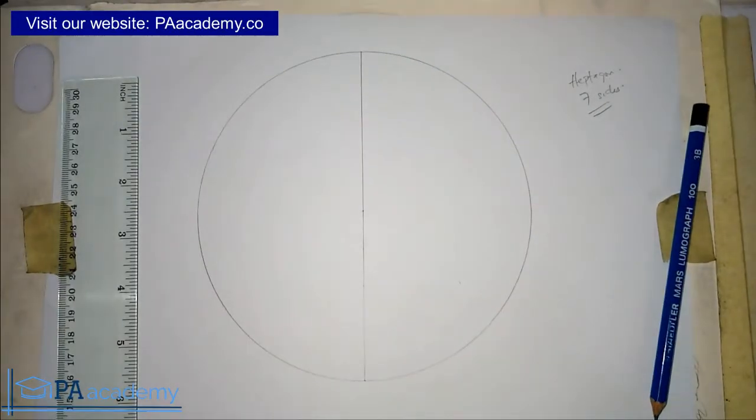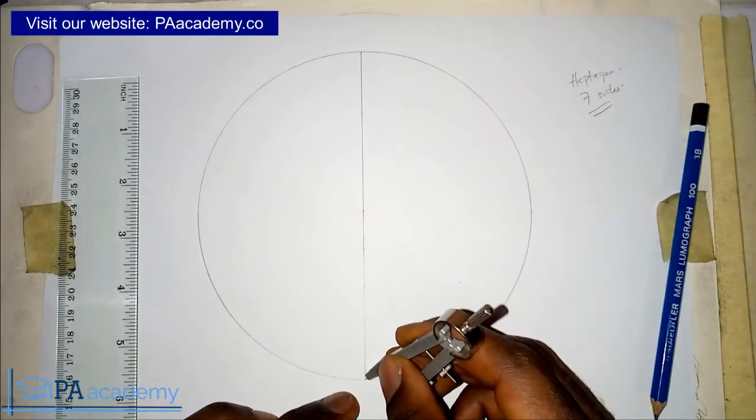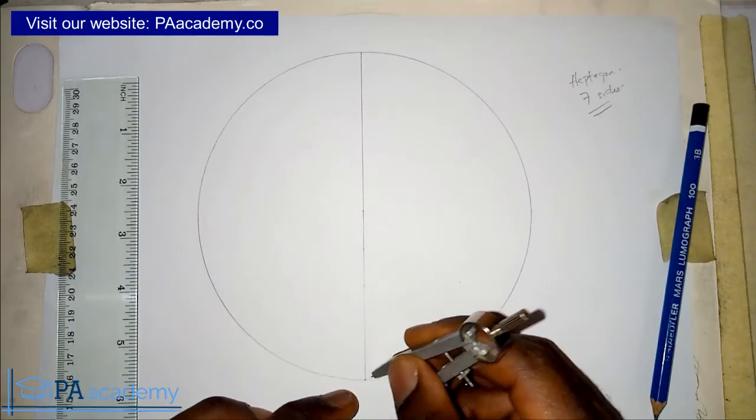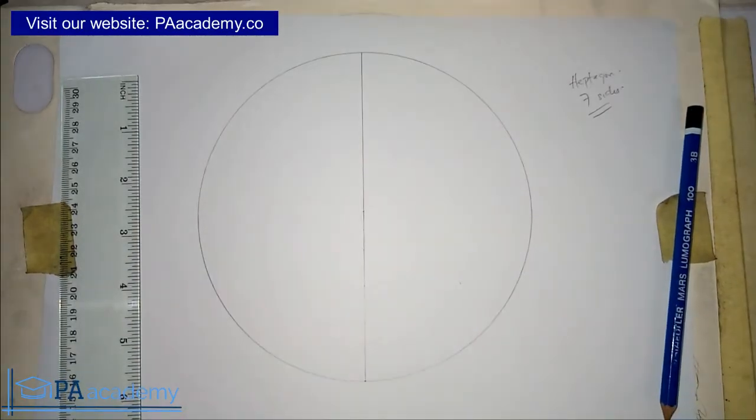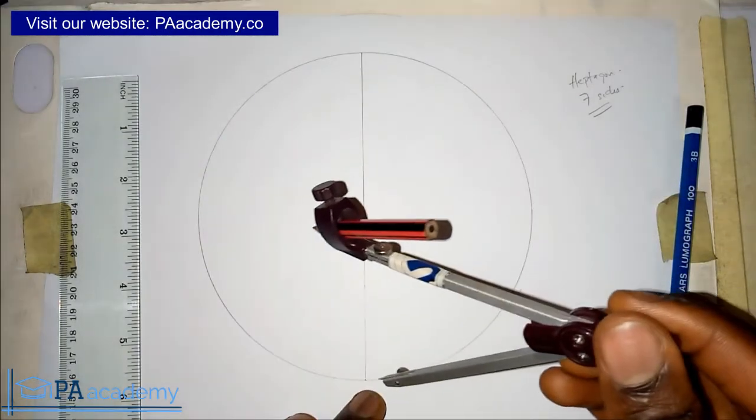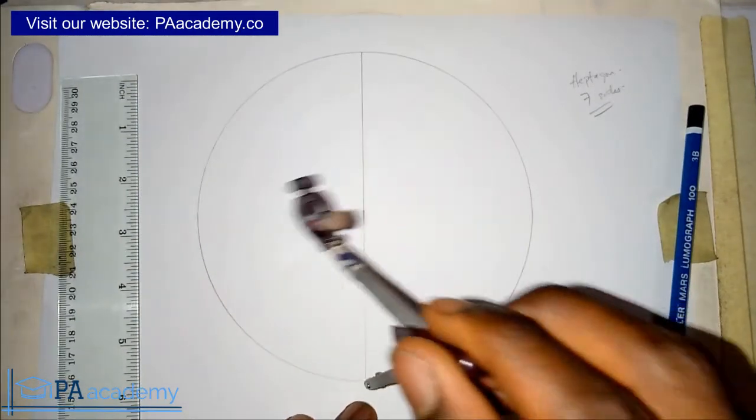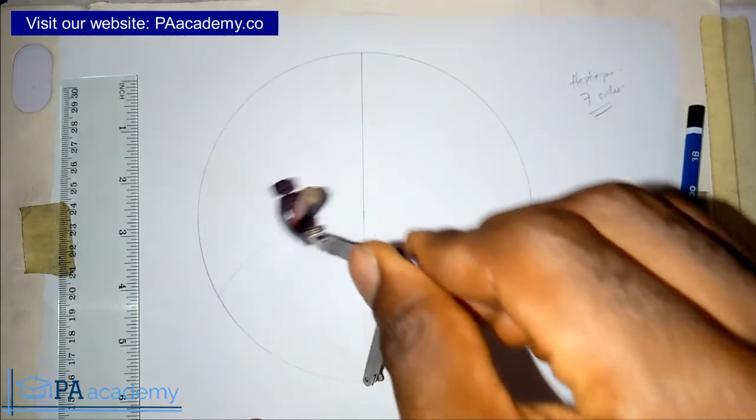You notice this point where this vertical line, which is the diameter, is touching the circle. You bring back the compass with the same radius you're using to draw the circle, and you are going to draw an arc like this.